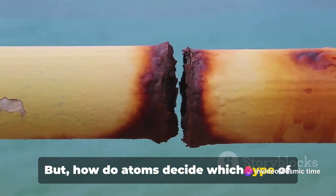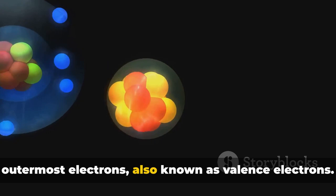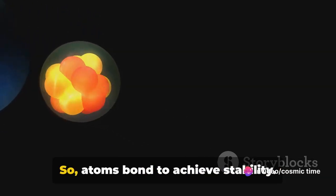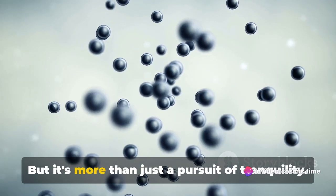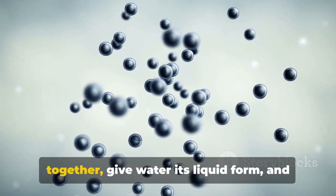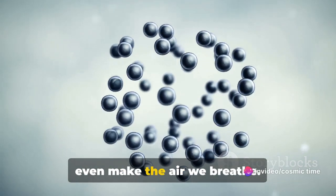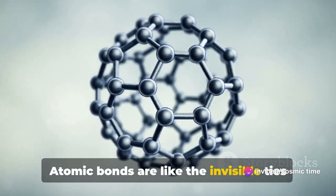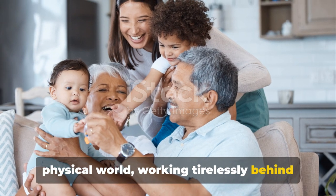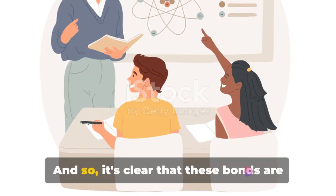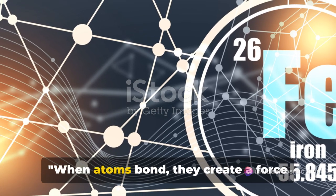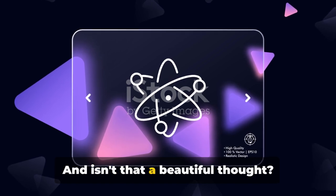But how do atoms decide which type of bond to form? The answer lies in their outermost electrons, also known as valence electrons. Atoms will either share, donate, or pool their valence electrons to reach a stable state. So, atoms bond to achieve stability. But it's more than just a pursuit of tranquility. These bonds form the backbone of everything around us. They hold the pages of your book together, give water its liquid form, and even make the air we breathe. Atomic bonds are like the invisible ties that bind the universe together.